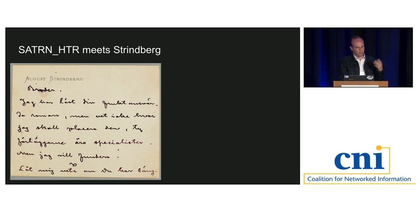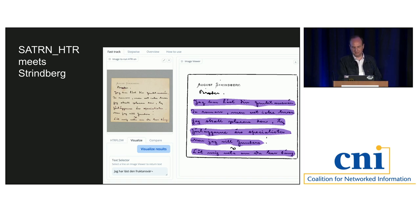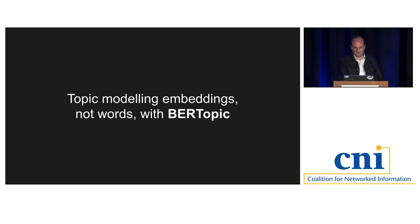Here's a letter written by Sweden's most famous author, August Strindberg. It's really hard to read, but Saturn handles it — it basically reads 'I've read your horrible novel,' which is actually what it gets correct.